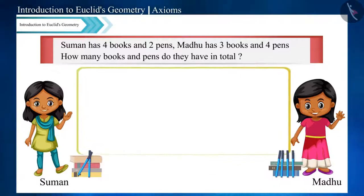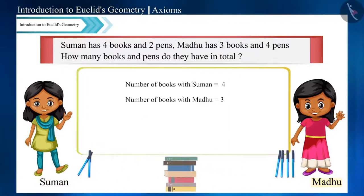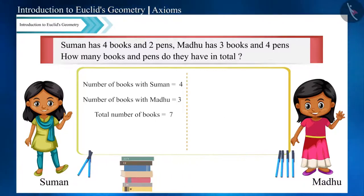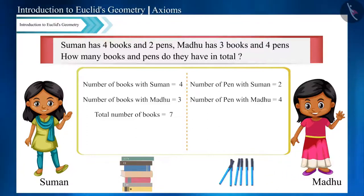Suman has four books and Madhu has three books, that is, both have seven books in total. And Suman has two pens and Madhu has four pens, that is, they both have a total of six pens.